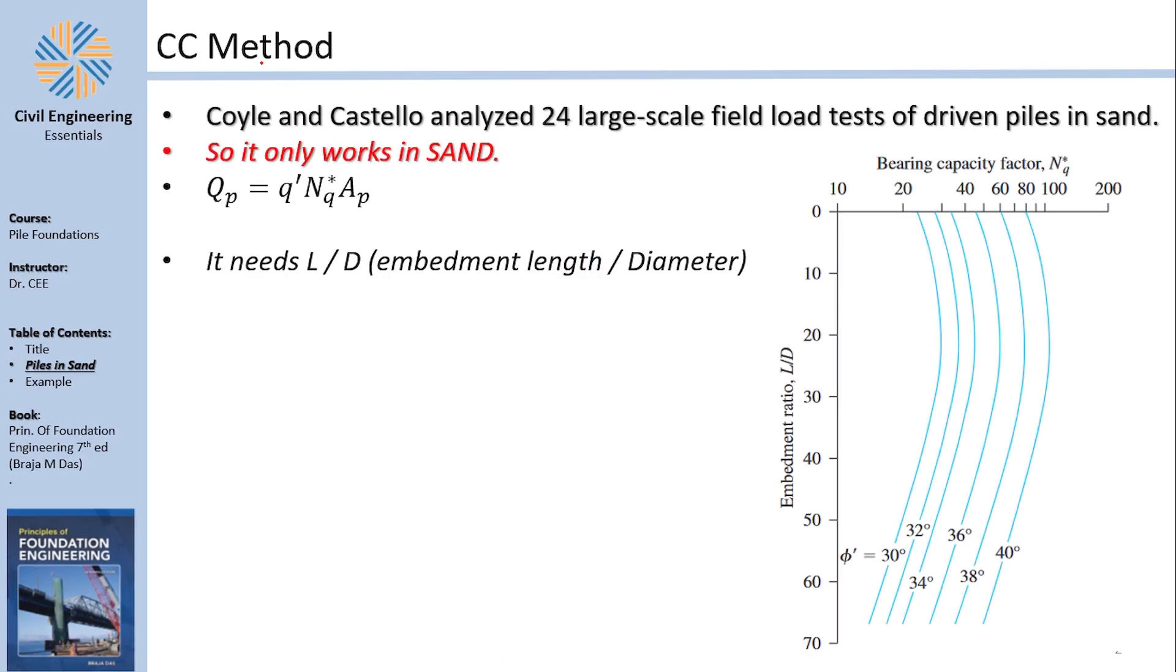Coyle and Castello's method is a very quick method. They analyzed a lot of real life-sized piles and found approximations and correlations for the bearing capacity in sand—because they tested in sand, that's where it works. They basically give you one bearing capacity using those values. It's a very similar equation to what we have seen before in Vesic's method, but the difference here is that this is only the pressure without the average thing. Vesic's method has been explained in the previous video—you can access it on the top right.